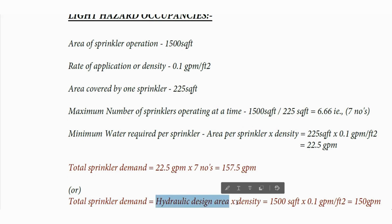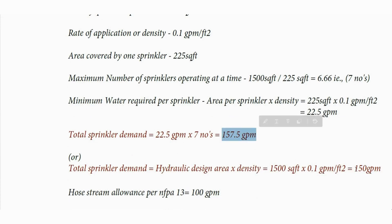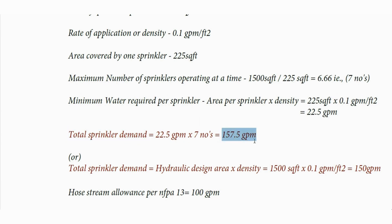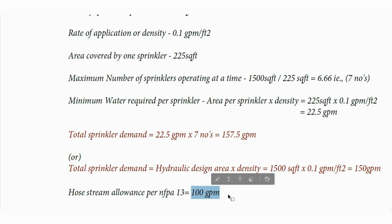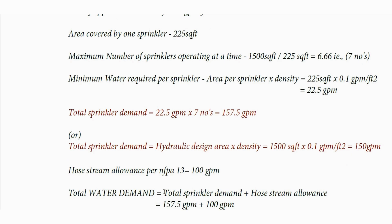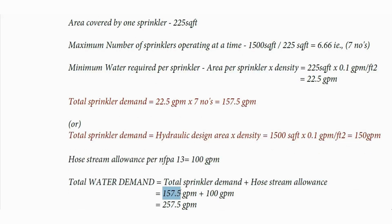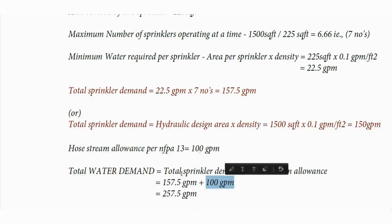The total sprinkler demand can also be calculated from the area-density curves using the formula: hydraulic design area multiplied by density. So 1500 multiplied by 0.1 equals 150 GPM. Since the demand based on number of sprinklers (157.5 GPM) is higher, we use that value. We then add the hose stream allowance — for light hazard, the combined inside and outside hose is 100 GPM. Therefore, total water demand is 157.5 GPM plus 100 GPM, equaling 257.5 GPM.